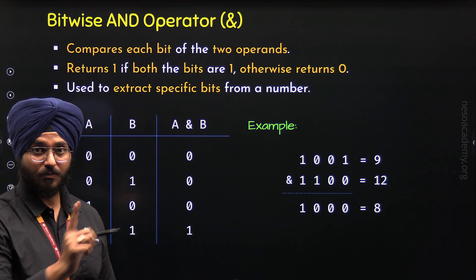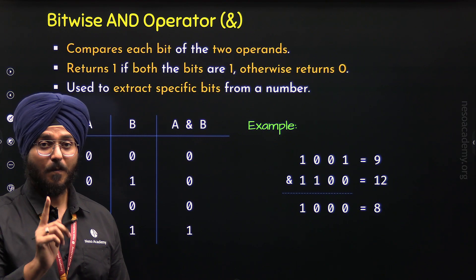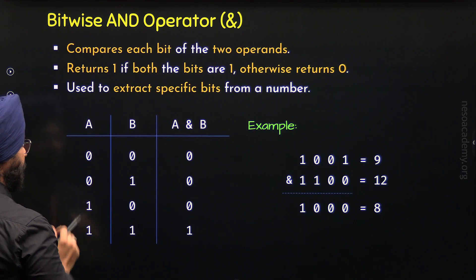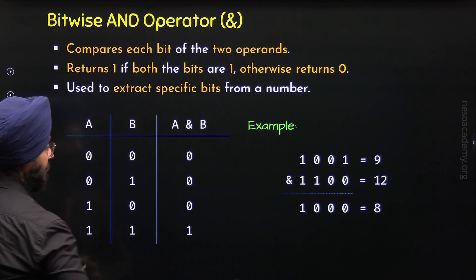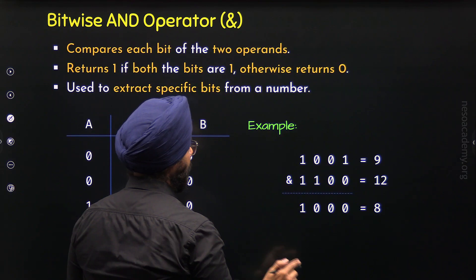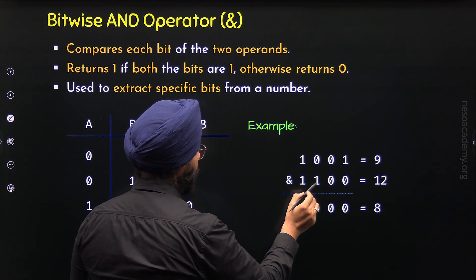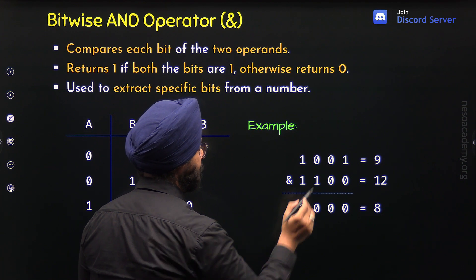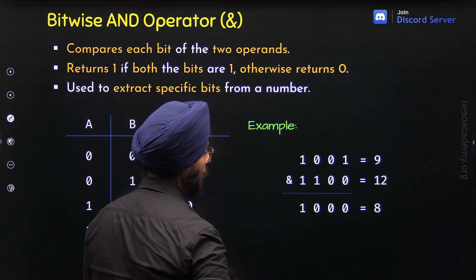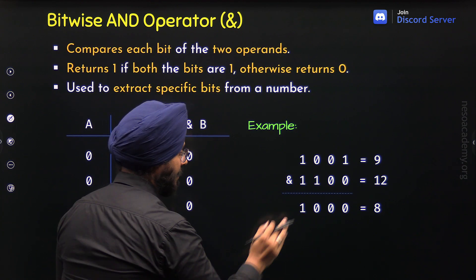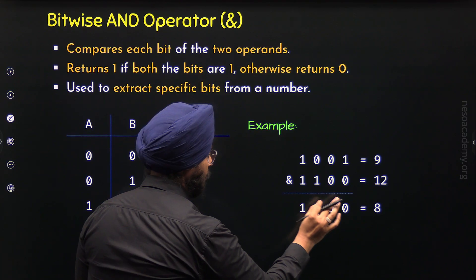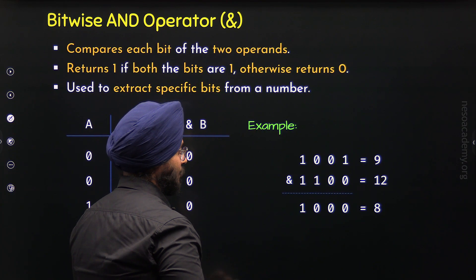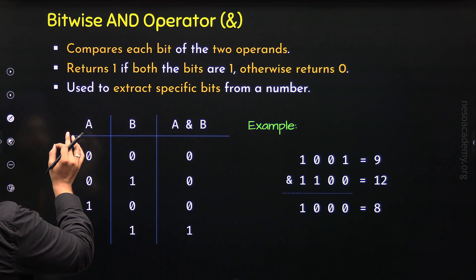But when we set a specific bit in the second operand to 0, we will get 0 as the result. That is why we set these two bits to 1 — because we want to extract those two bits. And we set 0 for the remaining bits because we do not want them. So this is the reason why we are getting the result as 1000, and we are able to extract the bits we wanted.